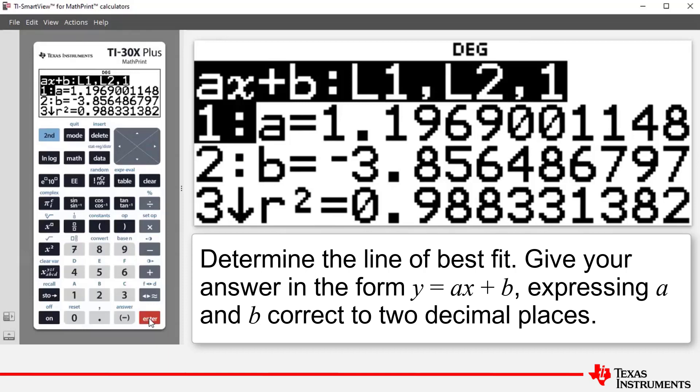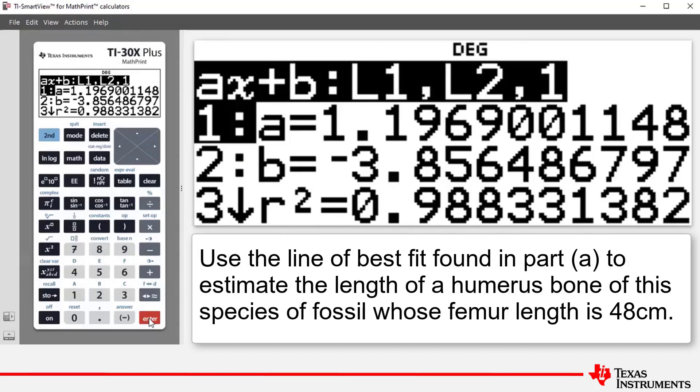Now to answer part B. We want to use this line of best fit to estimate the length of a humerus bone whose femur length is 48 centimeters. So we want to find the value of Y when X is equal to 48.